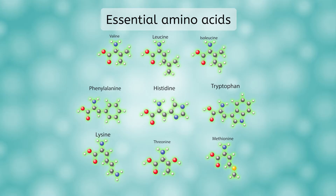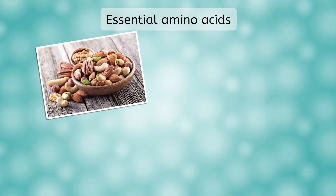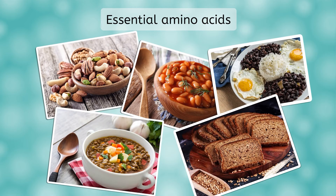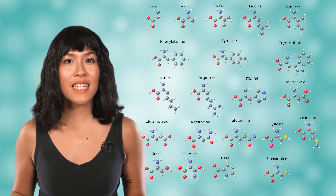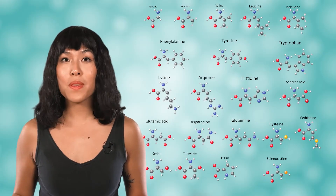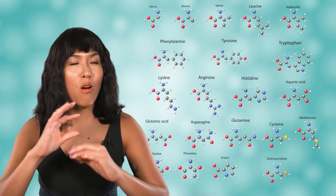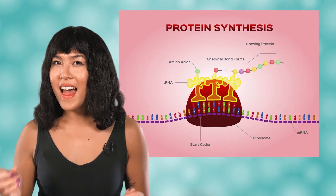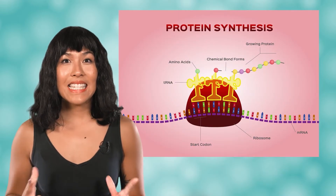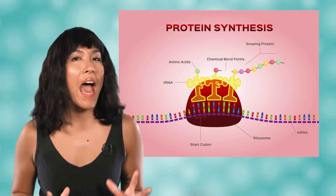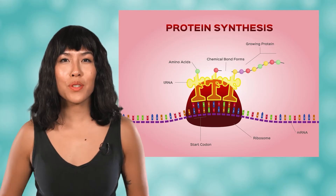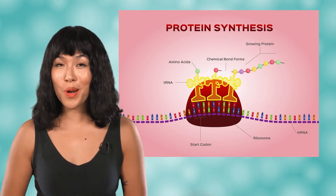Foods which contain some or all of these essential amino acids include nuts, beans, lentils, eggs, and whole grains. Eating a variety of these healthy foods ensures that you get all of the amino acids you need, in addition to providing healthy carbohydrates and lipids. There are many thousands of different proteins in our bodies, but they are all made from the same 21 building blocks. DNA is coded instructions which tell our cells how to assemble amino acids into proteins. We'll learn more about how this amazing process works in Unit 5.